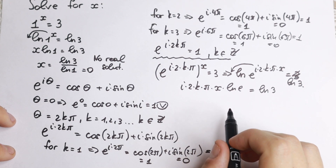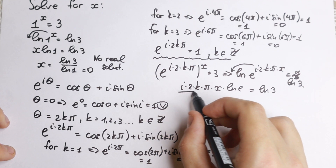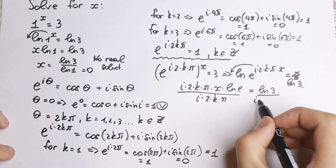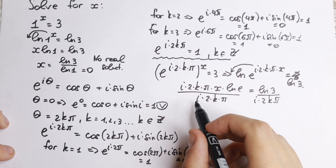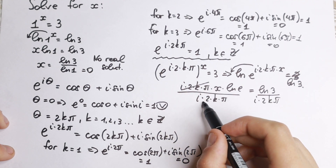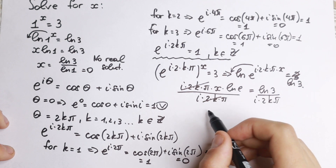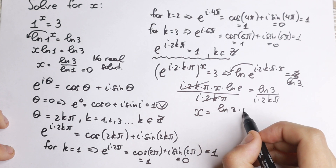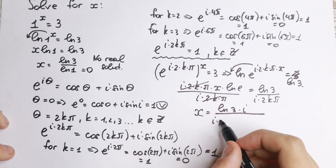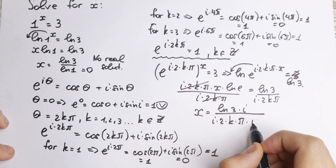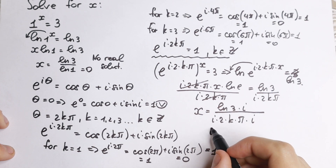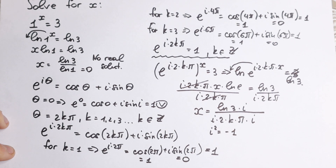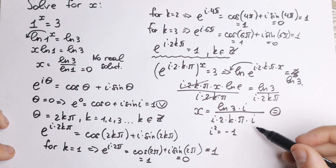We need our x, so let's divide by i times 2k pi. Since natural log e equals 1, we can cancel that. We get x equal to natural log 3 divided by i times 2k pi. Multiplying numerator and denominator by i, and using i squared equals minus 1, we get our final answer with a minus sign.